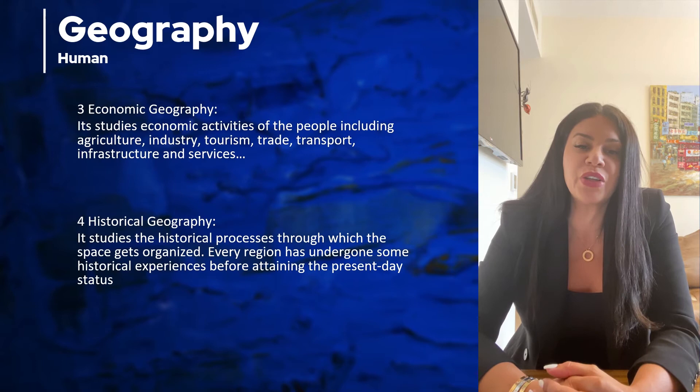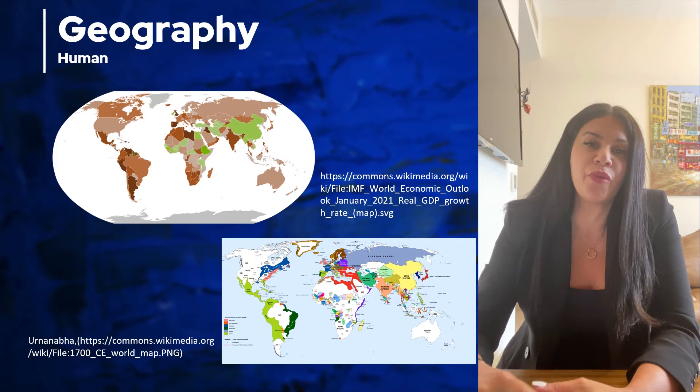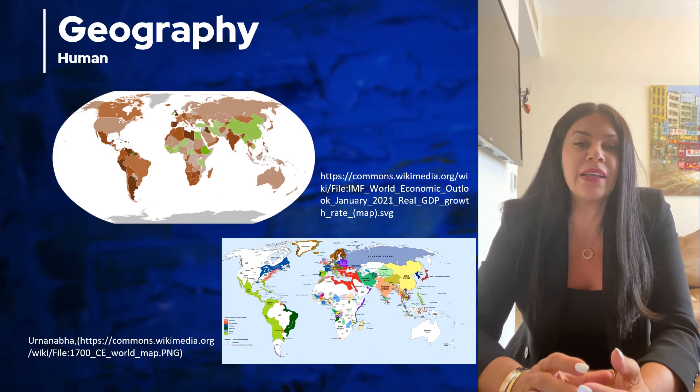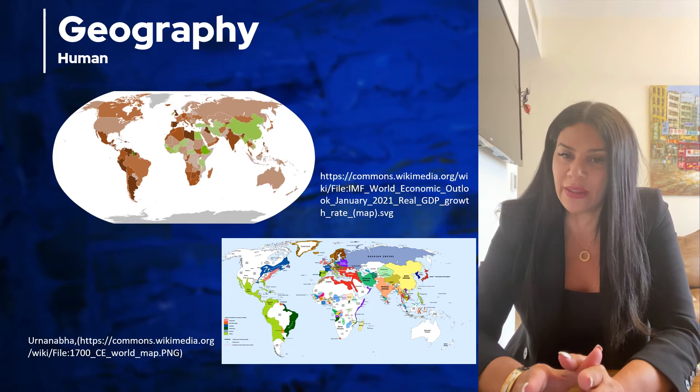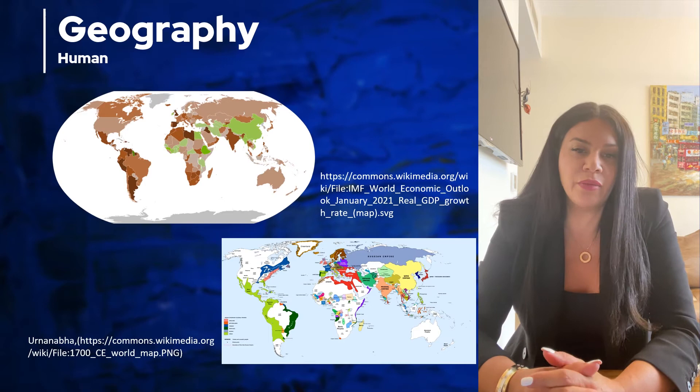Moving on to the next topic of human geography: historic geography. It captures the historic events of a place — which people have ruled in this area earlier, and which people are ruling in this area or country now. It deals with the historic events of a place.